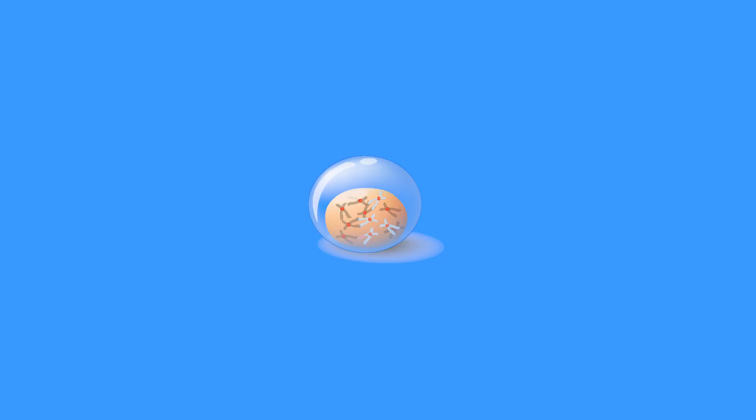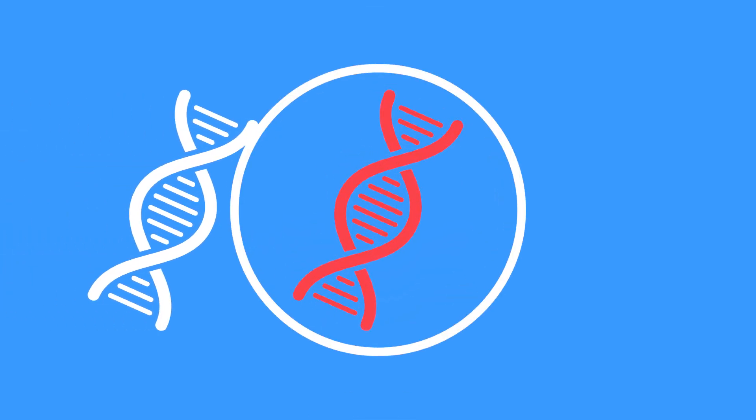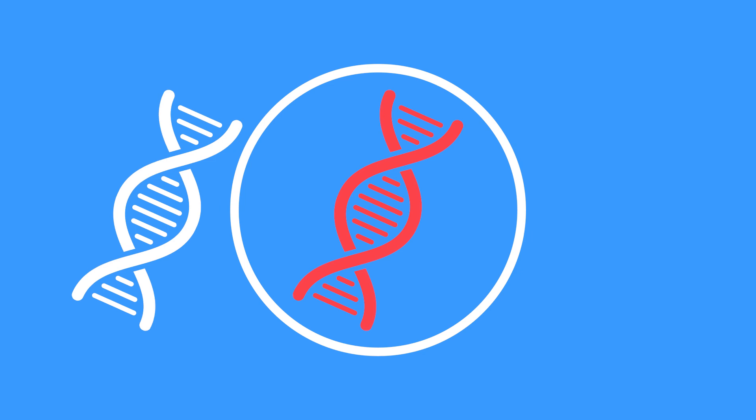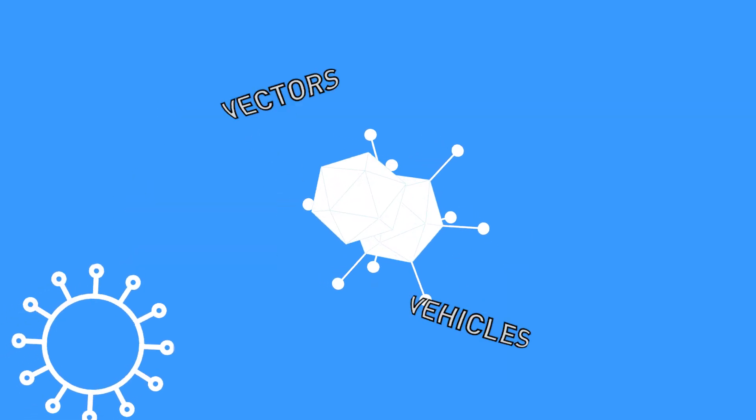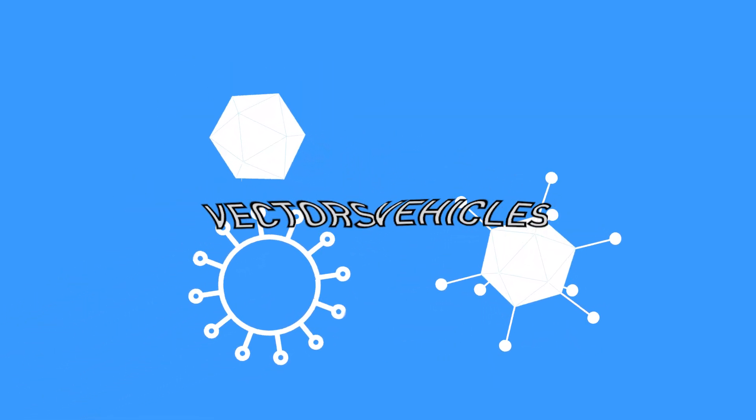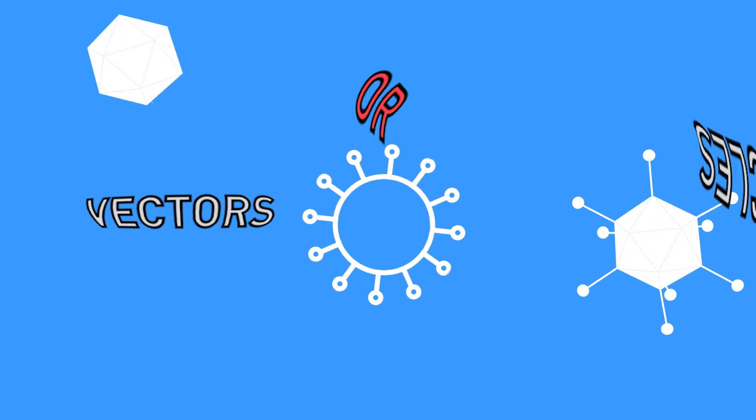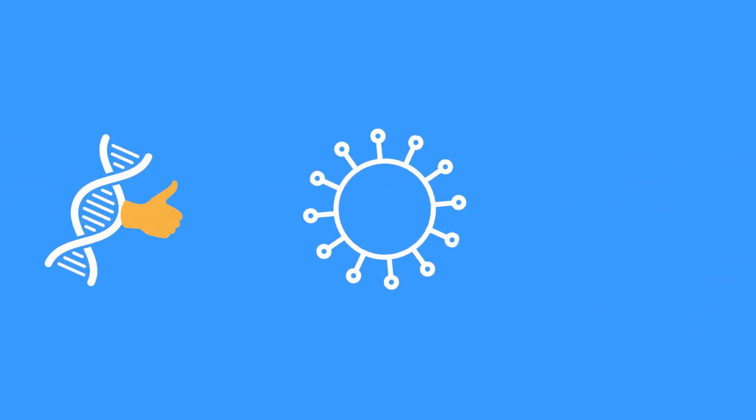How do they do it? Say scientists want to add back a healthy copy of a gene to cells. They need an efficient way to do it. So scientists use vectors or vehicles to deliver a gene. The healthy gene hitches a ride in the vector.